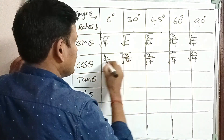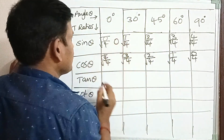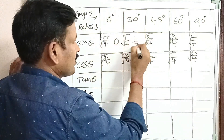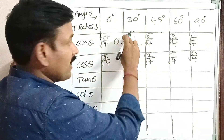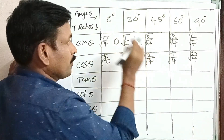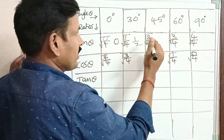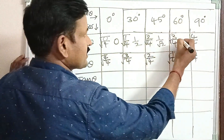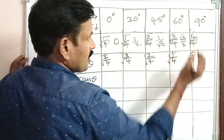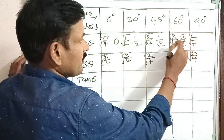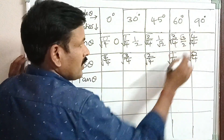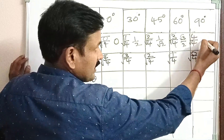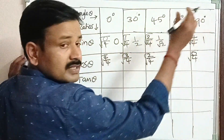Now, 0 by 4 is 0, which is sine 0 = 0. Sine 30 is 1 by 2, since root 1 is 1 and root 4 is 2. Sine 45 is 1 by root 2. Sine 60 degrees is root 3 by 2, since root 3 divided by root 4 is 2. And 4 by 4 is 1, so root 1 is 1, meaning sine 90 degrees is 1.